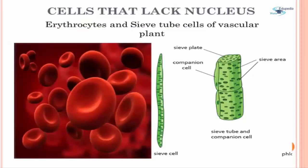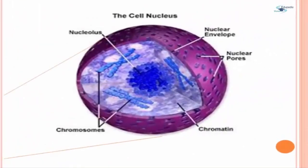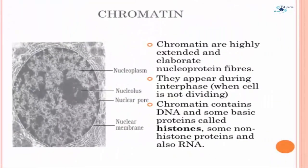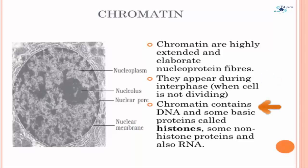The nucleomatrix or nucleoplasm contains the nucleolus and chromatin. The interphase nucleus — meaning the nucleus of a cell which is not dividing — contains chromatin. Chromatin consists of highly extended and elaborate nuclear proteins. Chromatin appears during interphase when the cell is not dividing. Chromatin contains DNA and some basic proteins called histones, some non-histone proteins, and also RNA.